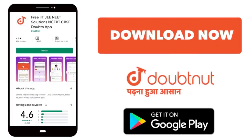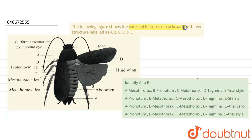So everyone, let's solve the question. The following figure shows the external features of cockroach with few structures labeled as A, B, C, D and E. So we have to identify these A, B, C, D and E. So let's see the first here. The first they have labeled this.